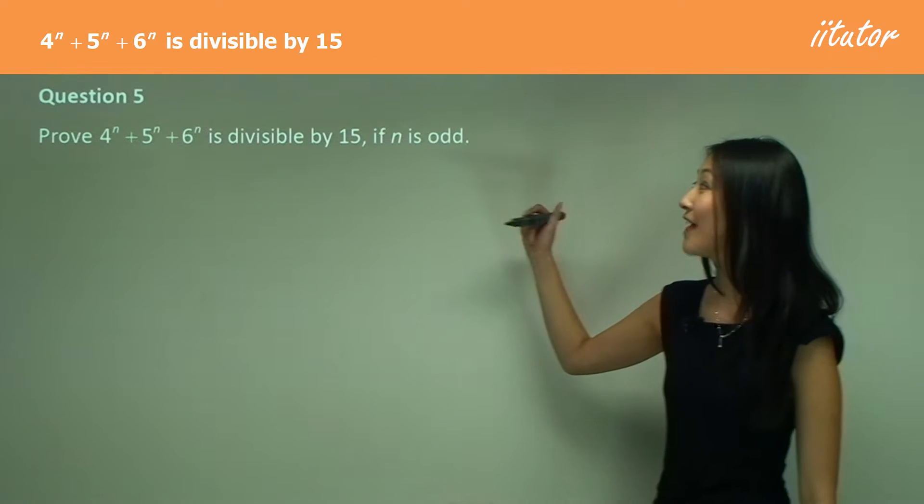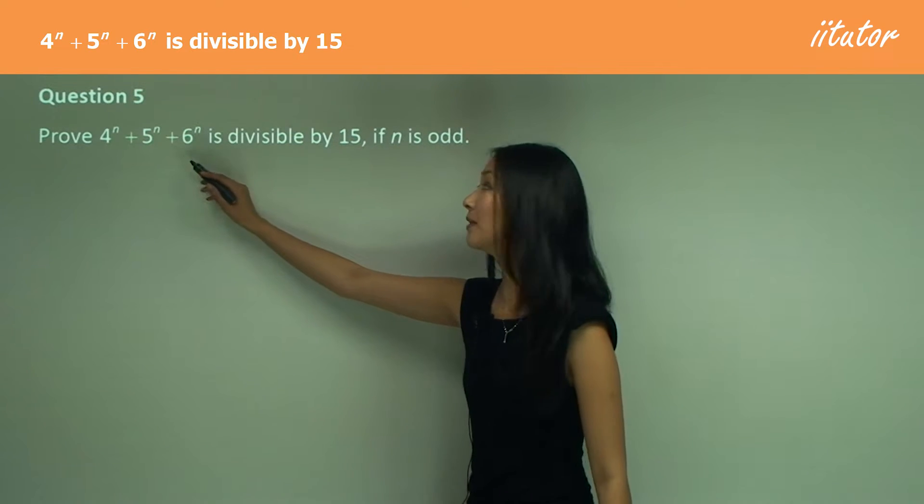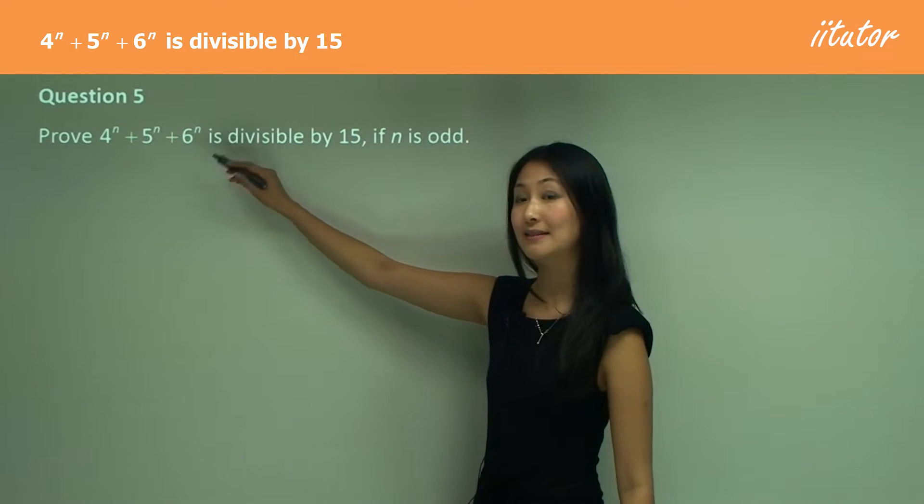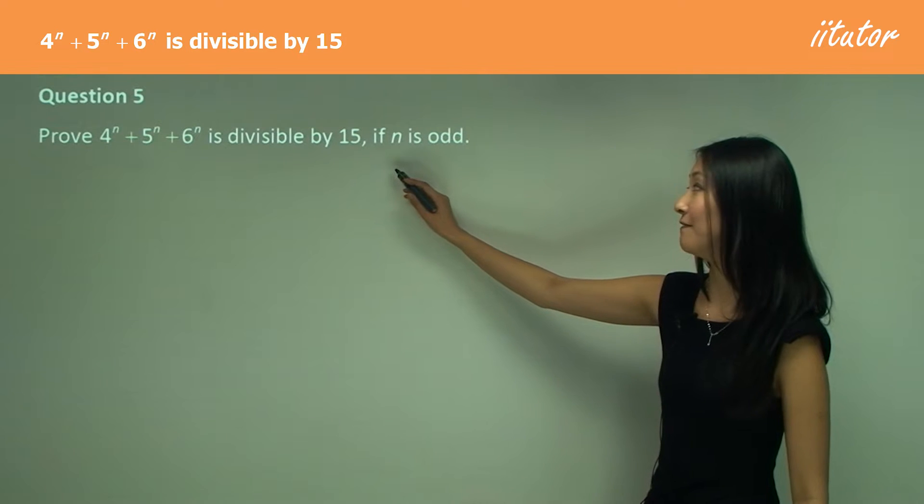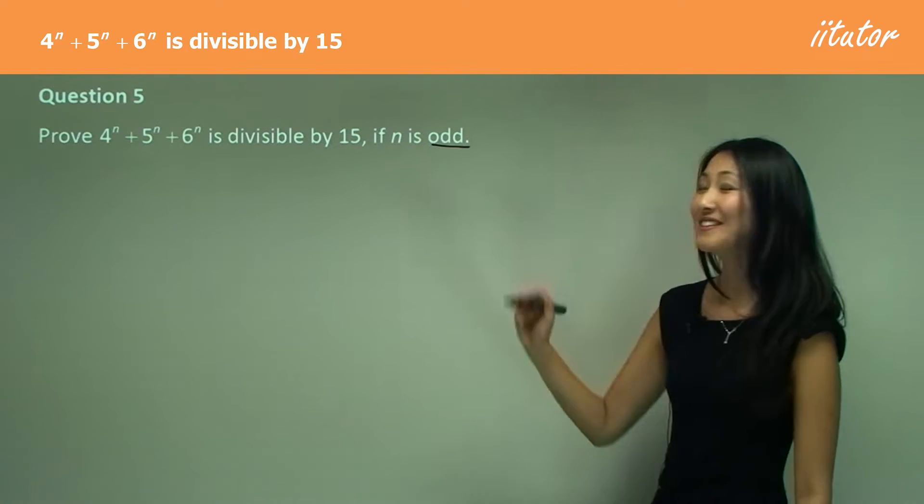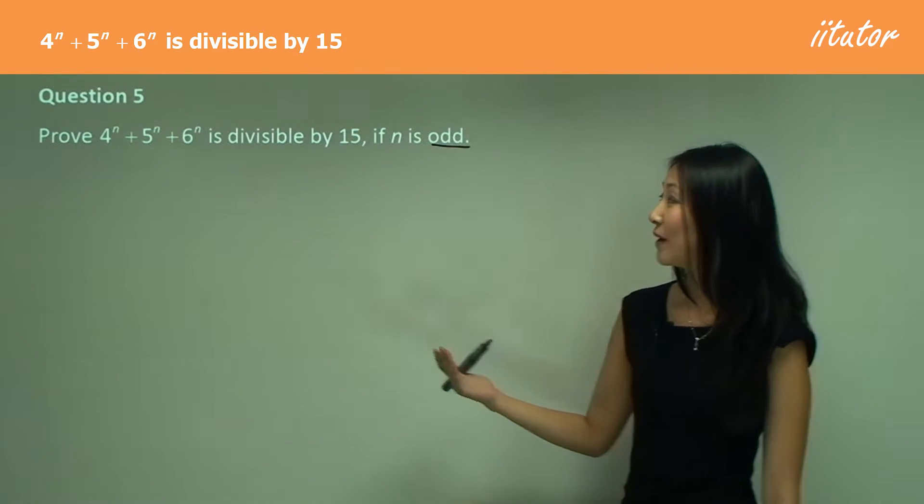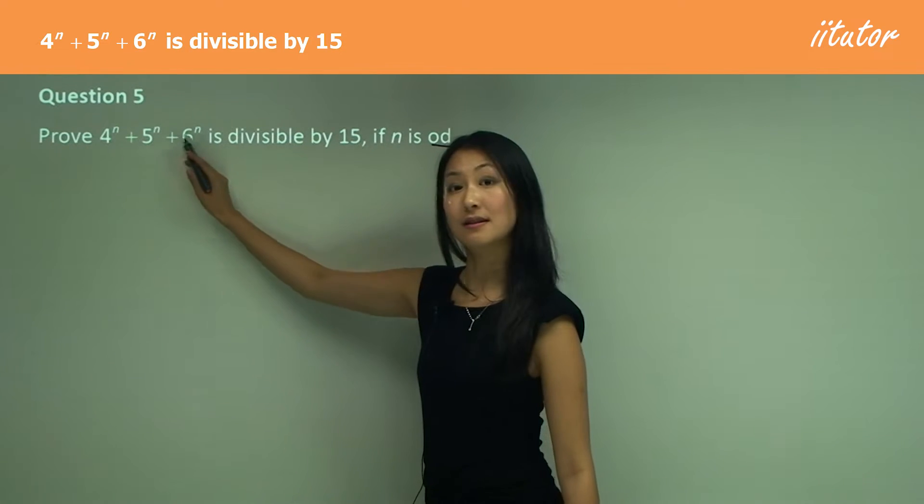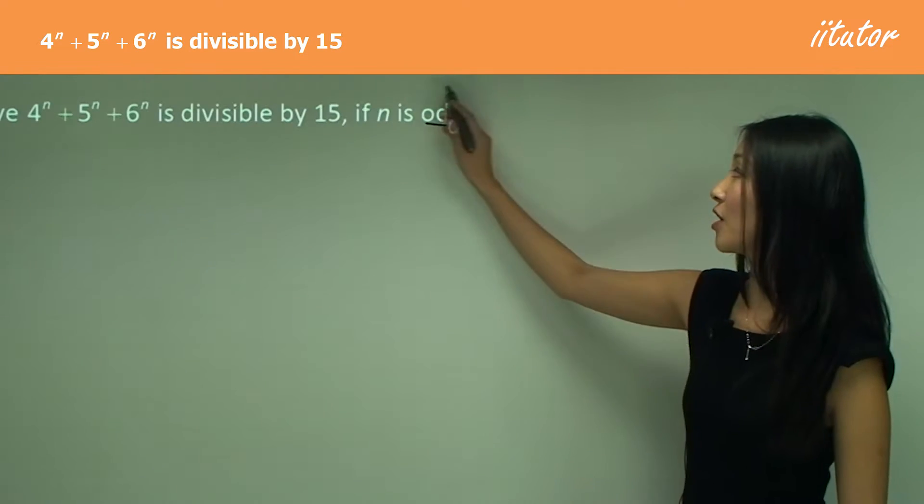We want to prove that 4 to the power of n plus 5 to the power of n plus 6 to the power of n is divisible by 15 if n is odd. So there's two things here. First, we've never worked with three indices as you can see here. It's also odd.